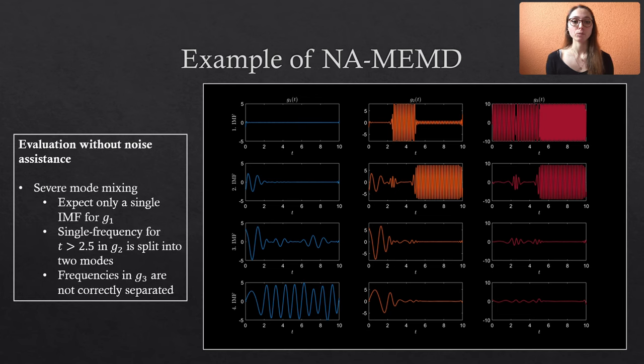For the orange data, we would expect one IMF containing the lower frequency wave and one IMF comprising the higher frequency wave with a separation at t equals 2.5. But again, the data is spread across more modes and the same basically holds for the red data.